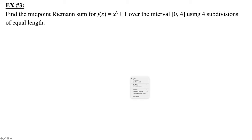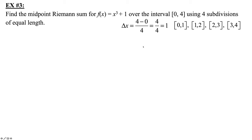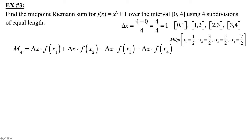Find the midpoint Riemann sum of f(x) equals x cubed plus 1 over the interval 0 to 4 using 4 subdivisions of equal length. By rule, B minus A is 4 over 4 equals 1. So each rectangle base is 1. Our intervals are 0 to 1, 1 to 2, 2 to 3, 3 to 4. For midpoints, we get fractions: x₁ is one-half, three-halves, five-halves, and seven-halves.